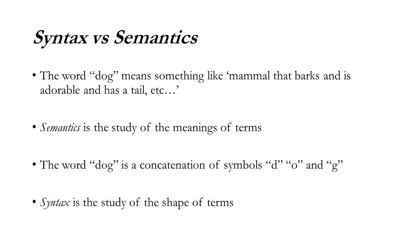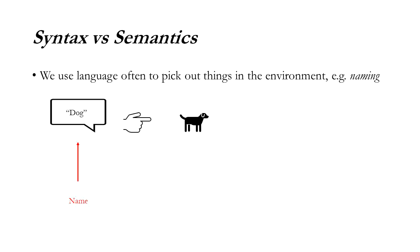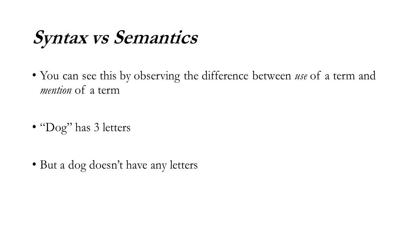We use language often to pick out things in environments — we call this naming. The shape of the letters 'dog' differs from the meaning of the term, which differs from the object referenced by the term. Here's the name, here's the thing named. You see this by observing the difference between the use of a term and the mention of a term. Logicians and philosophers like to point out this difference: 'dog' has three letters, but a dog like Scruffy doesn't have any letters — it's a dog.